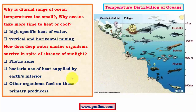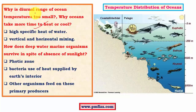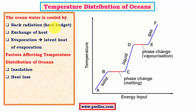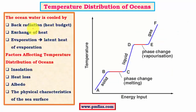Why is the diurnal range of ocean temperature so small and why do oceans take more time to heat or cool? Water has a high specific heat compared to land or other solid masses, which means water takes more time to get either cool or hot when a certain amount of heat is supplied. As a result, water doesn't gain or lose heat quickly, so the diurnal range is very small. There is also greater mixing in water due to various vertical and horizontal currents, which leads to transfer of heat from one region to another, further reducing temperature variation.